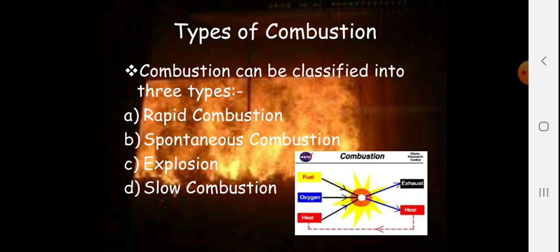The first is rapid — rapid means fast, and combustion means to get burned, so rapid combustion takes place quickly. Second is spontaneous combustion. Third is explosion, like the bursting of a bomb, nuclear bomb, or crackers — they just explode. And the fourth is slow combustion, which takes place slowly and will not be a complete combustion.